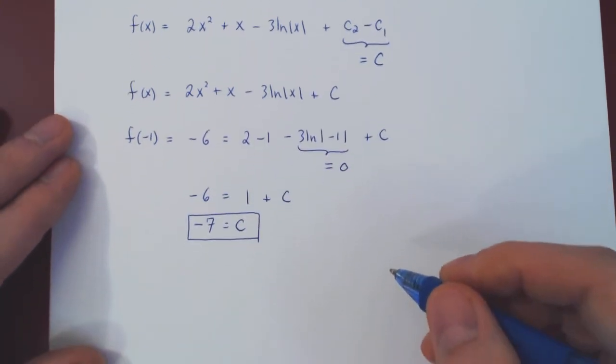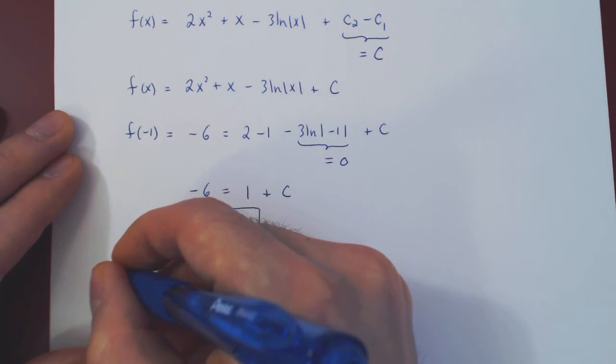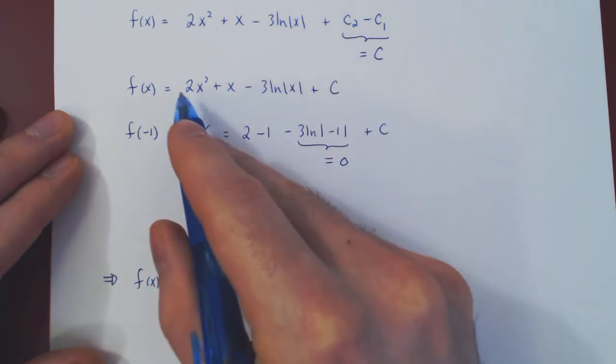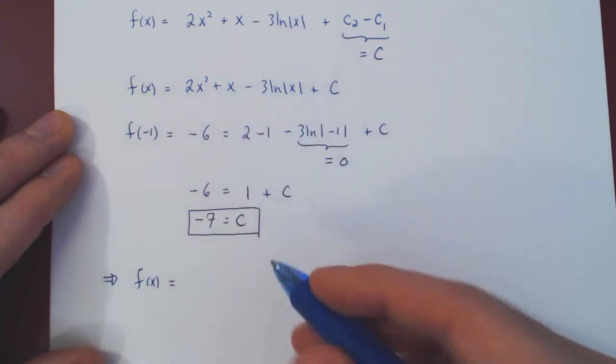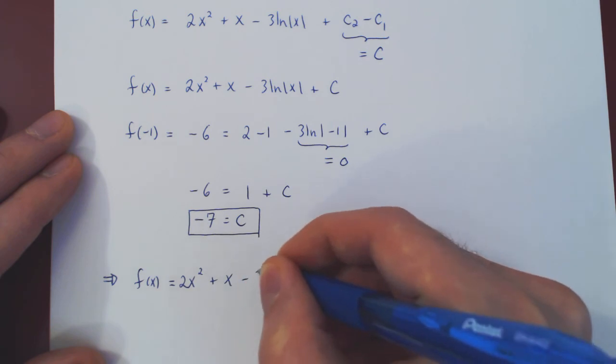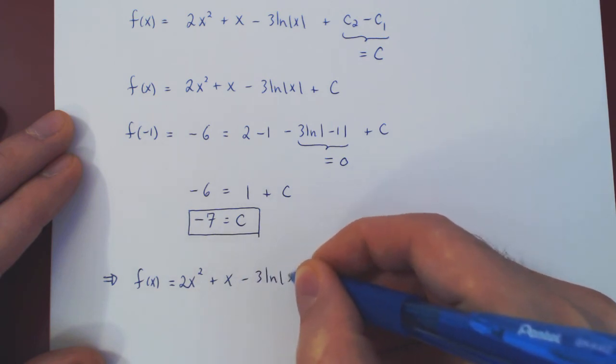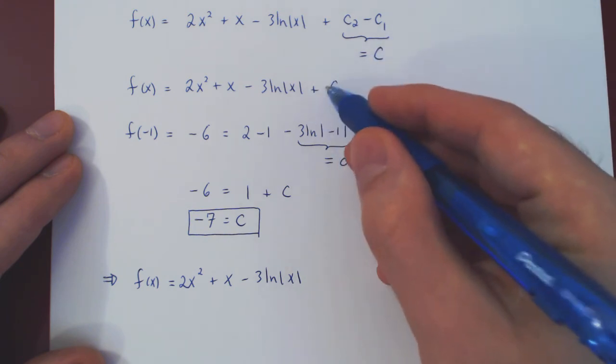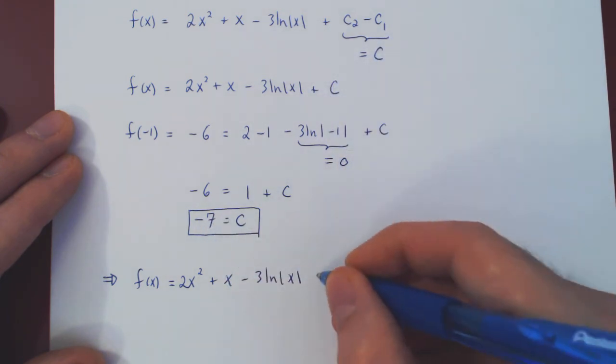And so in the end, we have our unique function. f(x) is equal to 2x² + x - 3 ln|x| plus c, which we have found to be -7. So -7.